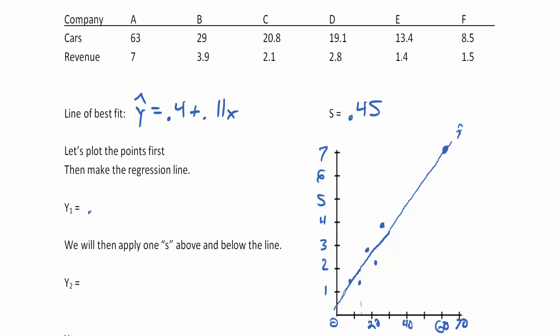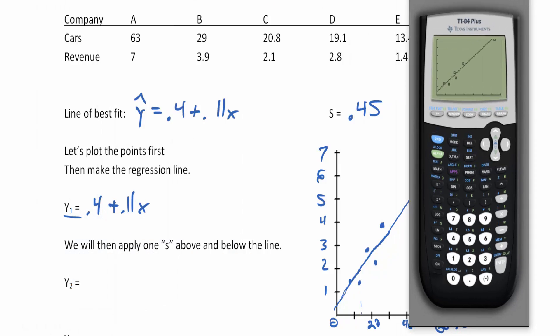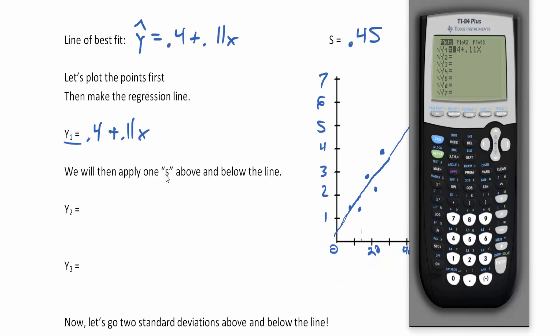Now we've got our 0.4 plus 0.11x. This is our y1. What do we do with the standard error of the estimate? We're going to apply one s above and below the line.